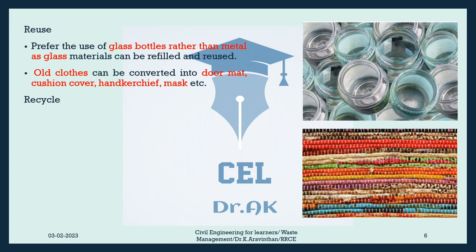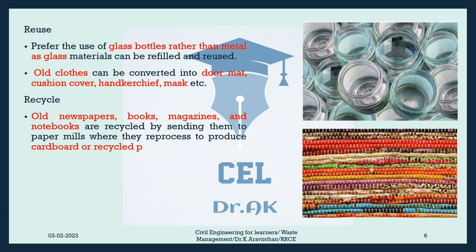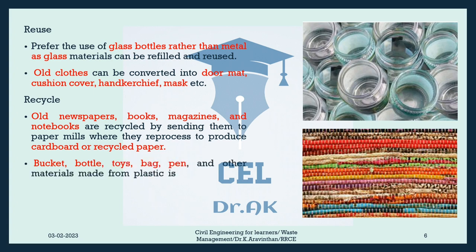Recycle: Old newspapers, books, magazines, and notebooks are recycled by sending them to paper mills where they are reprocessed to produce cardboard or recycled paper. Buckets, bottles, toys, bags, pens, and other materials made from plastic are sent to plastic processing factories, where they can be remolded to make new plastic items.